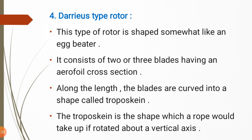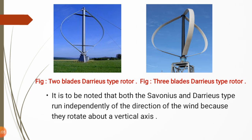Troposkine is the shape formed when a rope is rotated about a vertical axis — it takes a particular curved shape. This curved shape is known as troposkine. The left-hand figure shows a two-blade Darrieus type rotor and the right-hand figure shows a three-blade Darrieus type rotor, both having the egg-beater shape.